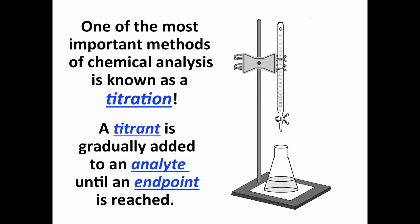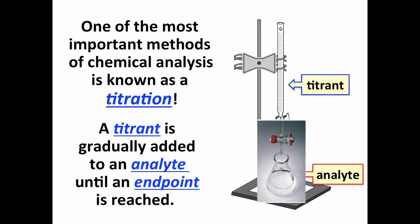In a titration, we have a titrant that is gradually added to an analyte until we reach an endpoint. Typically, the endpoint is something we will be able to see a color change occur. So we have a clear colorless solution, for example, and the solution turns pink.